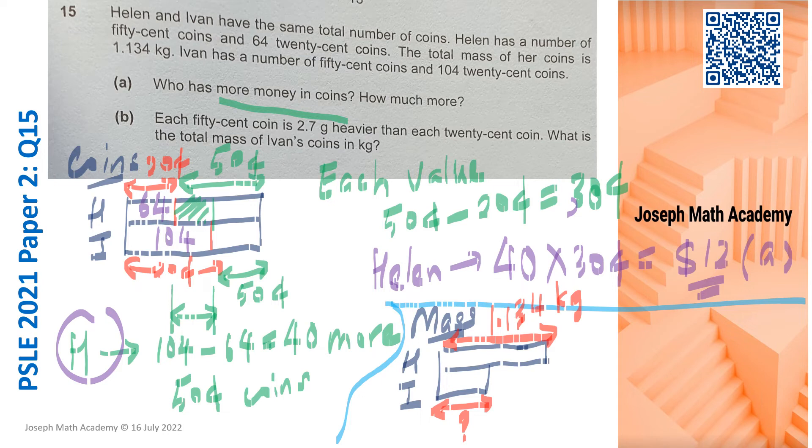Now to do this question, we need to know what is this. Then that will help us to find Ivan's, and that is part B concern. The difference in mass between Helen's and Ivan's coins would be definitely due to the extra 40 coins. So the extra 40 coins that Helen has should contribute to the difference in the total mass of the coins. So this part here is actually 40 times the difference of 2.7.